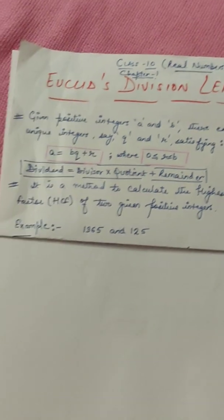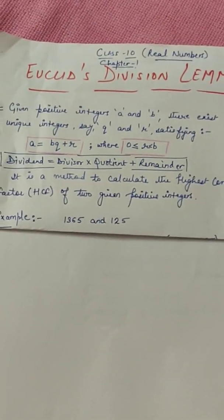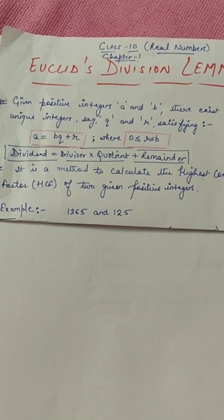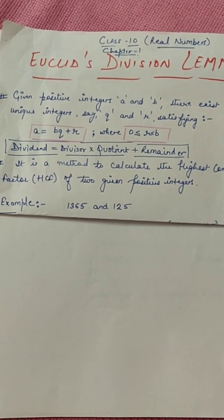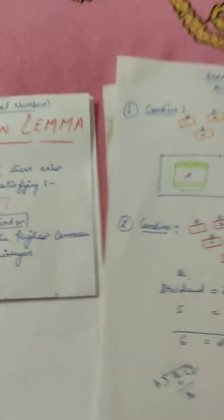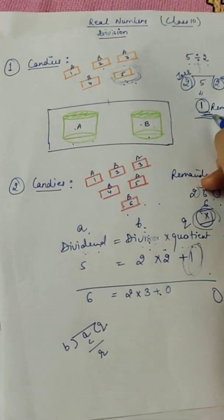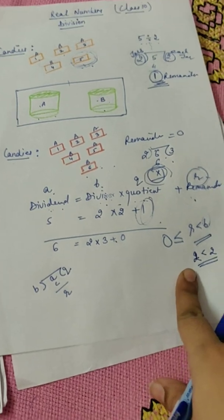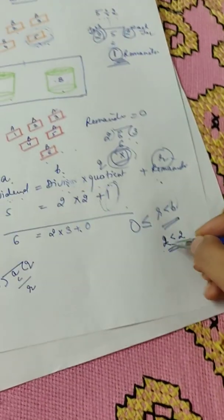It says that given positive integers A and B, there exist unique integers say Q and R satisfying A is equal to BQ plus R, where R lies between zero and B. This is the condition which says that your R, your remainder, will always be less than your divisor. Obviously, if it is equal to divisor...